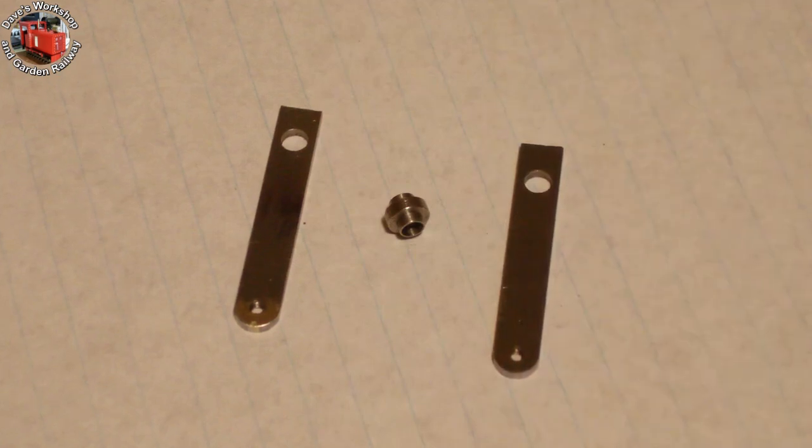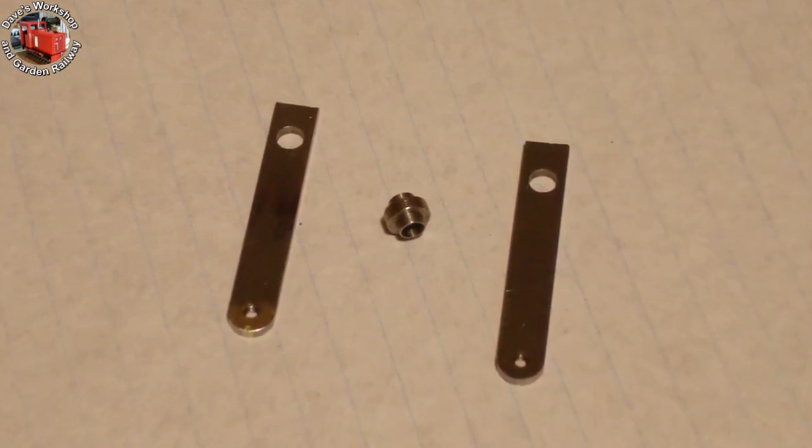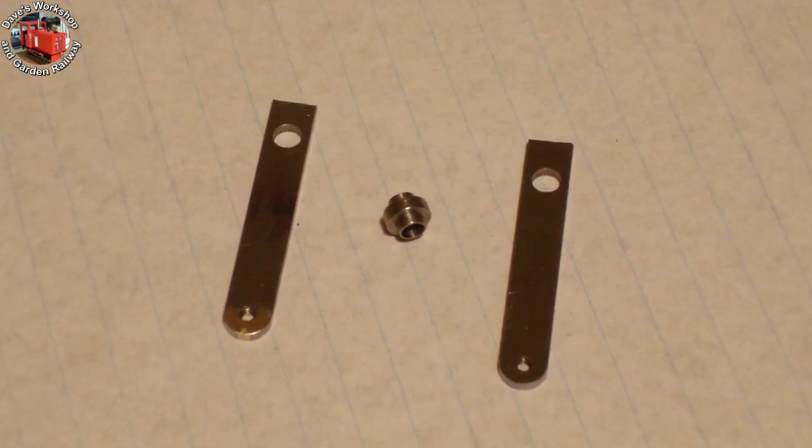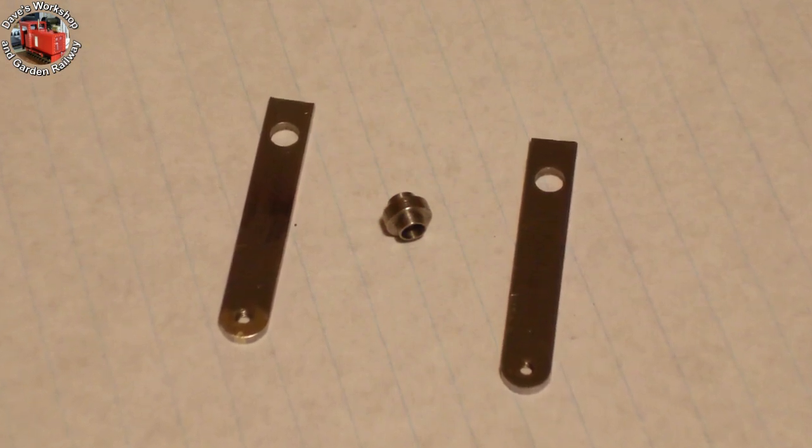Here are the pieces to make a new suspension arm, to hold up the extension rod. They will be brazed together. The boss is drilled 1/8th, to pivot on the shaft.